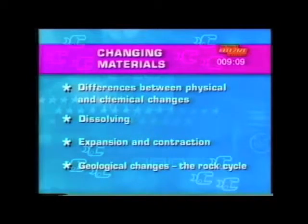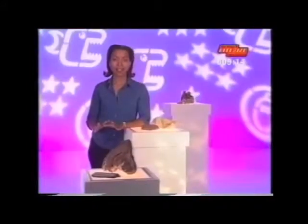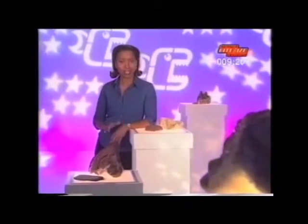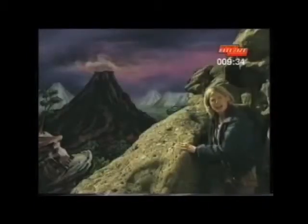We are now going to take a closer look at changes that happen over millions of years. Besides physical and chemical changes, there are also geological changes. These happen over millions of years, and we can summarize them in the rock cycle. This part of the unit will look at the rock cycle and the three types of rock you need to know.